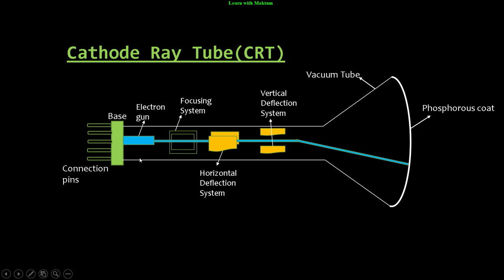Those electrons will be moving here and there, but we want them to move towards the screen. To help in that case, we are using the focusing system and deflection system, which guides the electron beam to go towards the screen.